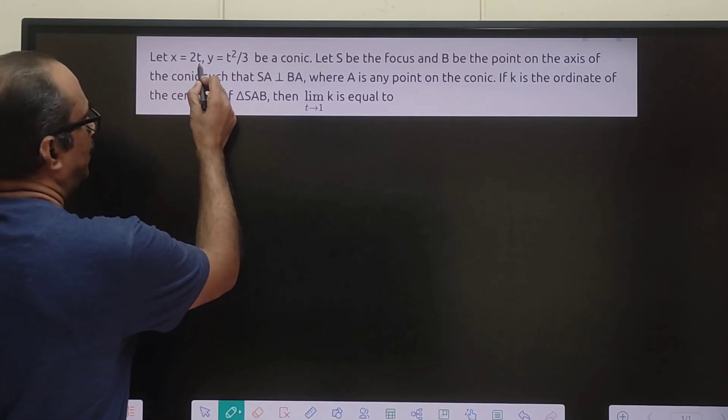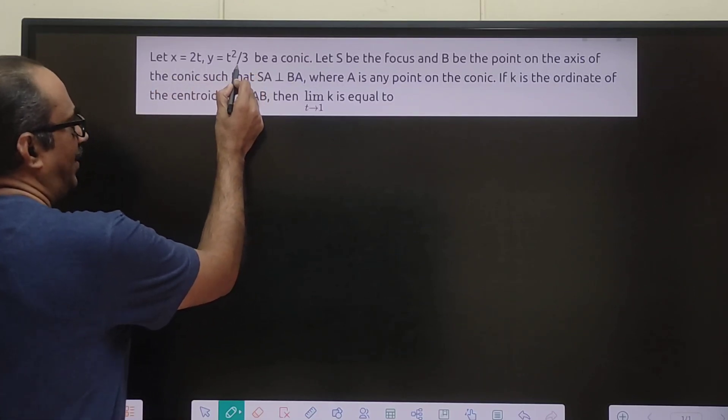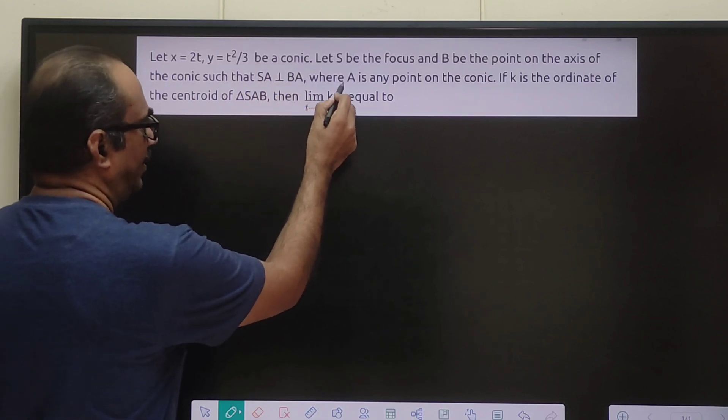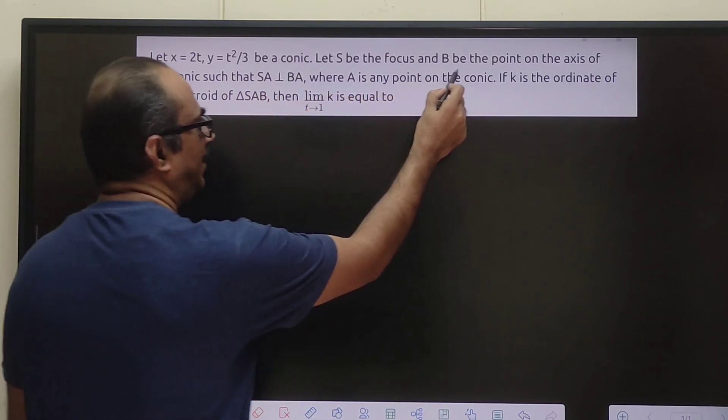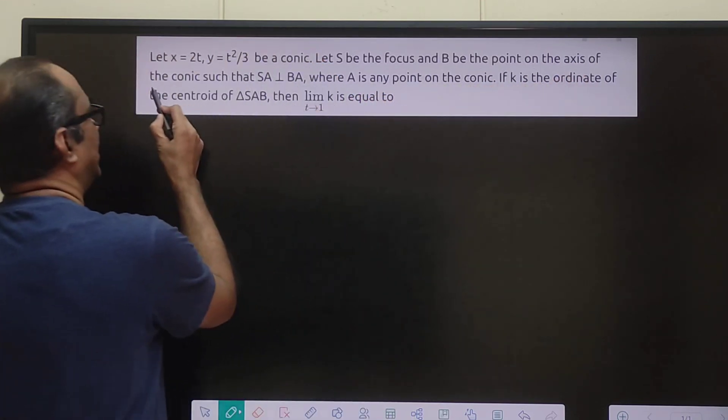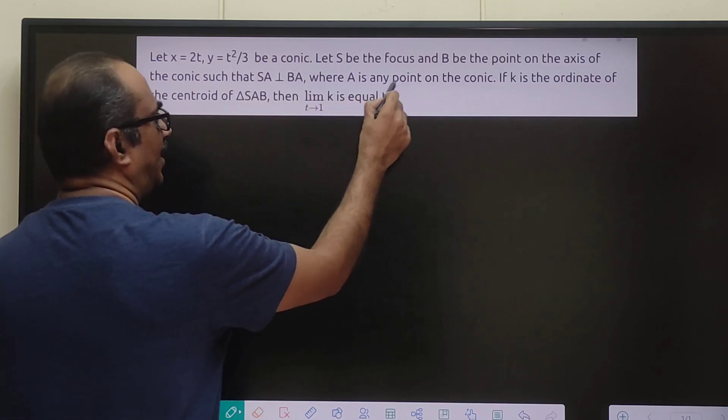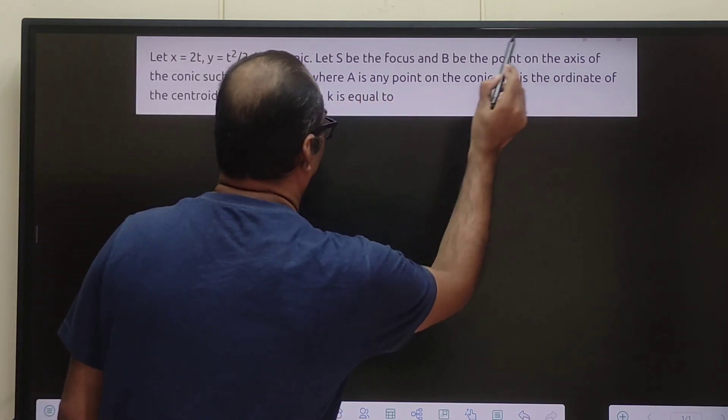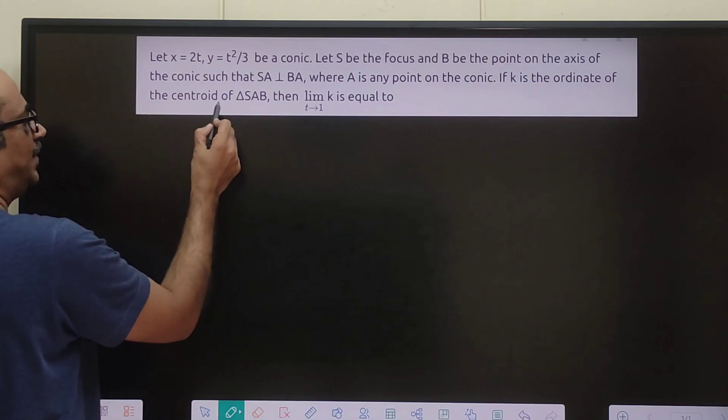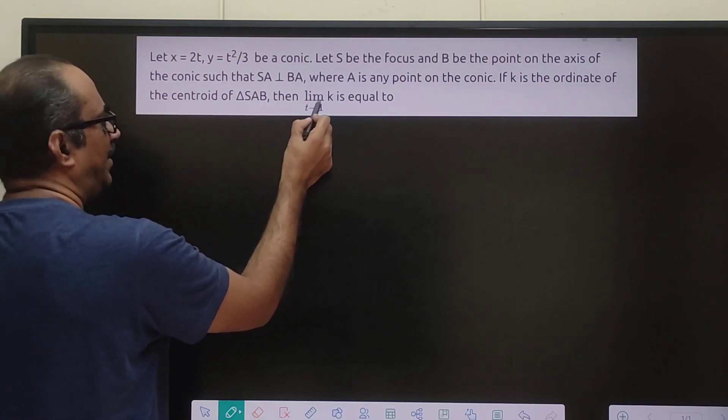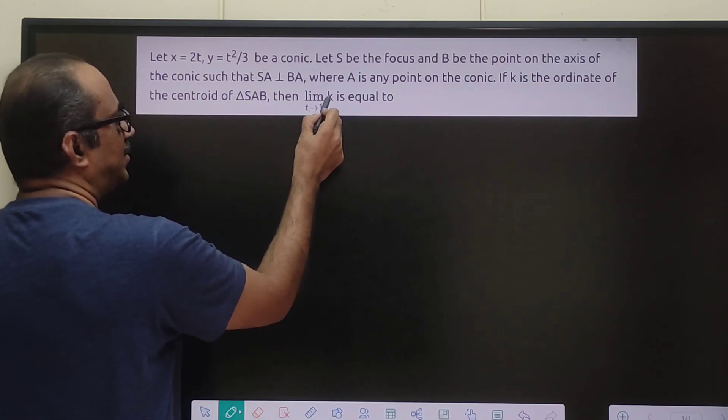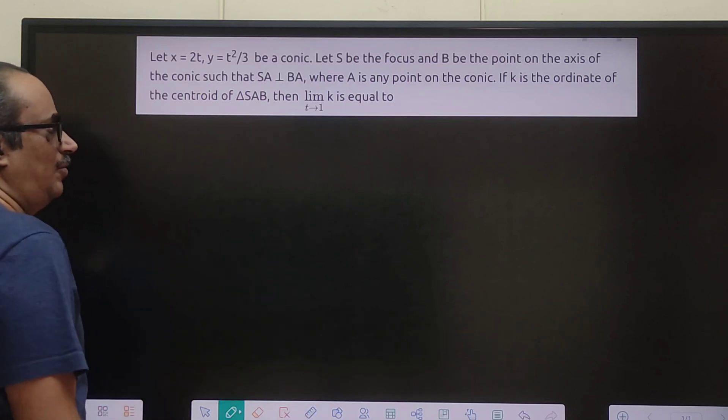Let x = 2t, y = t²/3 be a conic. Let S be the focus and B be the point on the axis of the conic such that SA perpendicular to BA, where A is any point on the conic. If k is the ordinate of the centroid of triangle SAB, then limit t tends to 1, k equals how much?